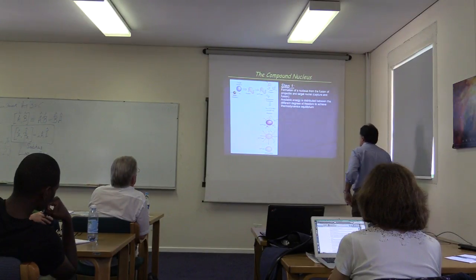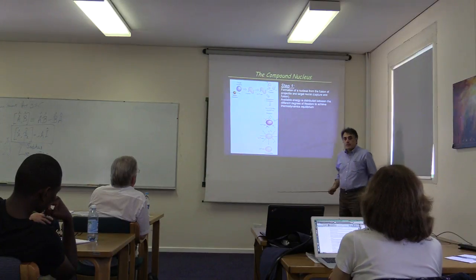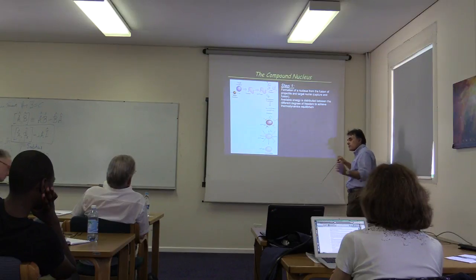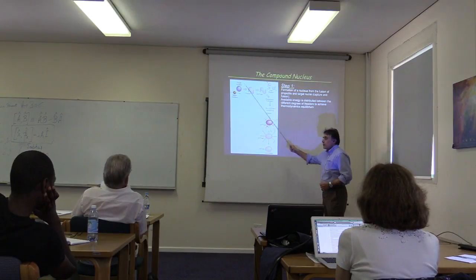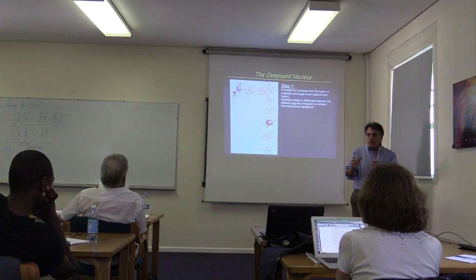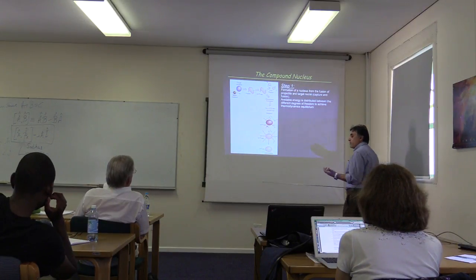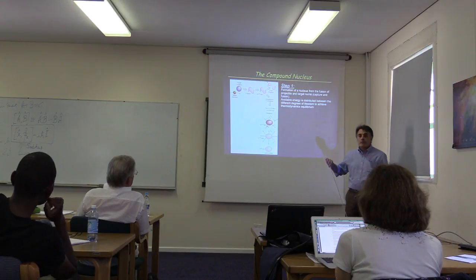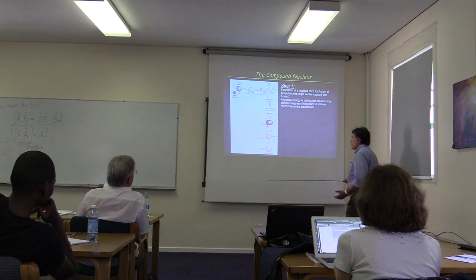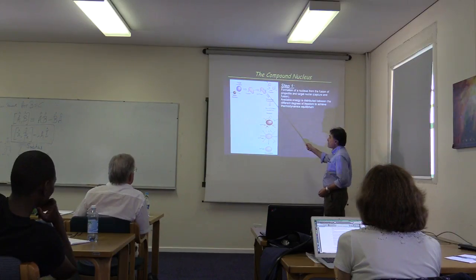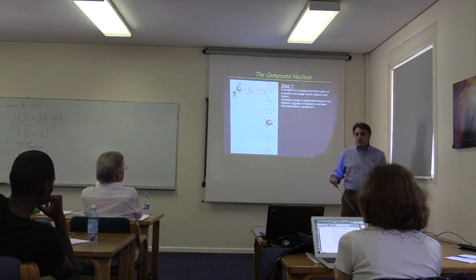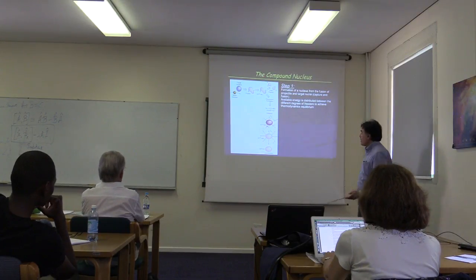First step, the formation of an intermediate system. This is called a compound nucleus. So the projectile fuses completely with the target and then produces an intermediate system. Why we call this intermediate? Because this system does not live forever. At one point, this system starts to decay. It's unstable. It starts rotating. It may do some kind of thing with what we call fission or earth fission. This is more interesting for heavy nuclei.